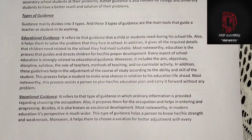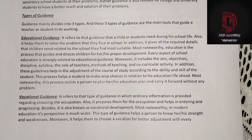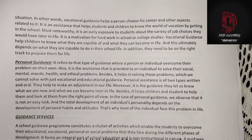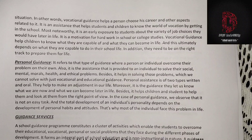Now it comes to vocational guidance. It refers to that type of guidance in which information is provided regarding choosing an occupation. It prepares them for the occupation and helps in entering and progressing. It is also known as vocational development, and in modern education its perspective is much wider. This type of guidance helps a person know their strength and weakness, and helps them choose a vocation for their better adjustment in every situation. Vocational guidance helps a person choose their career and other aspects related to it. It is an early exposure to students about the variety of job choices they would have later in life.